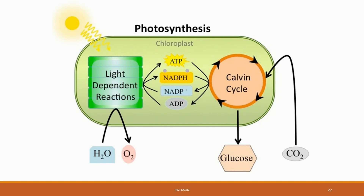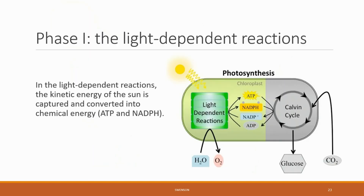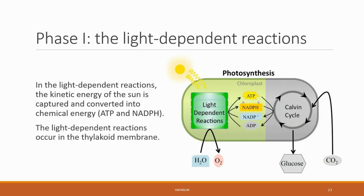Now we know that light energy is absorbed mostly in the blue, orange, and red spectrum and excites electrons into a high-energy, unstable state. This is important when it comes to understanding the light-dependent reactions. In the light-dependent reactions, the kinetic energy of the sun is captured via pigments and converted into chemical energy — ATP and NADPH.